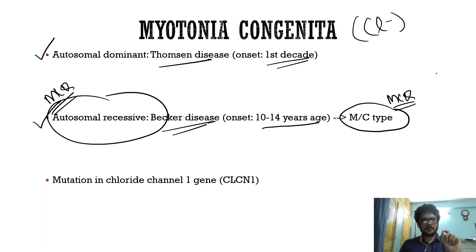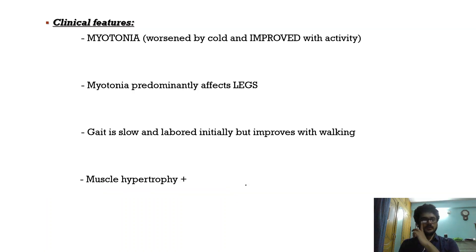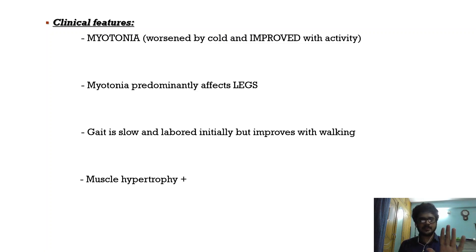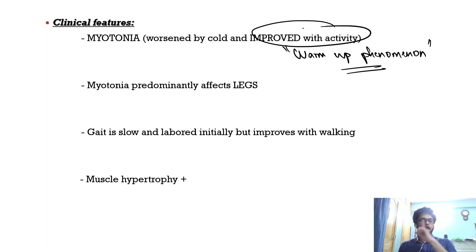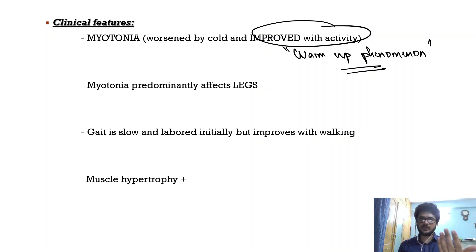Myotonia congenita is a chloride channelopathy due to a mutation in the chloride channel 1 gene, CLCN1. Patients have myotonia — delayed relaxation after contraction — and classically show the warm-up phenomenon: myotonia improves after a period of muscle activity. In contrast, paradoxical myotonia seen in paramyotonia congenita worsens with activity. Importantly, both types are worsened by cold.